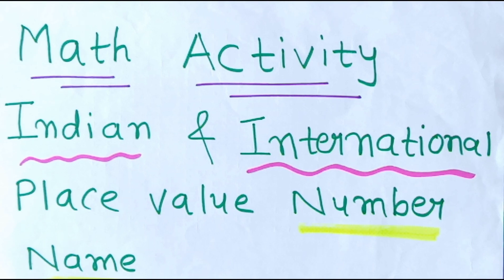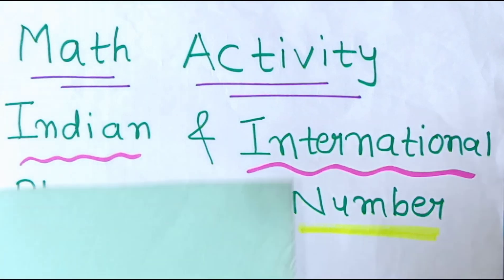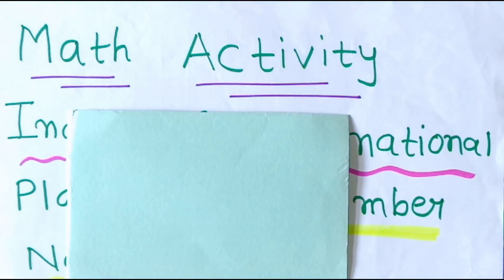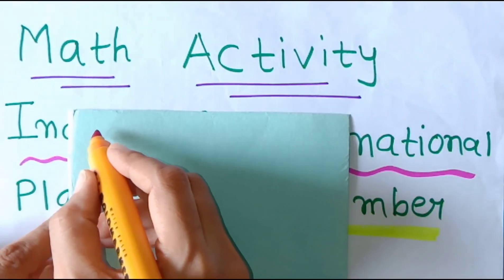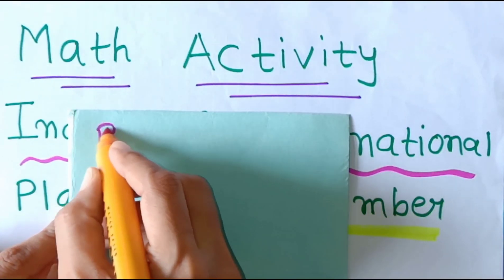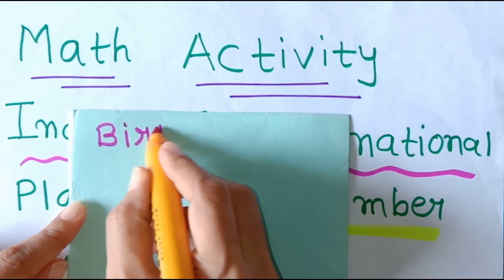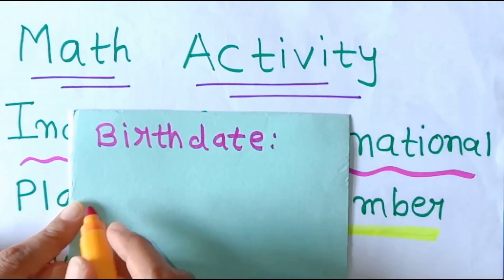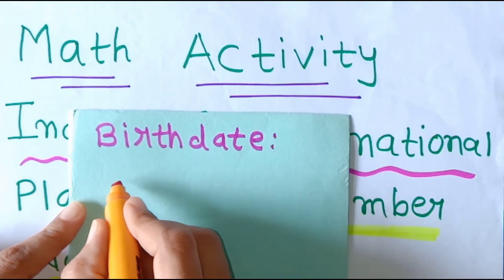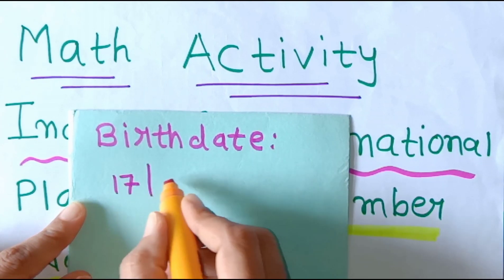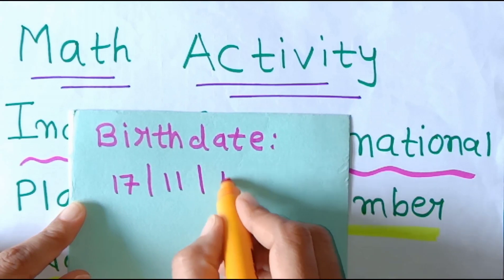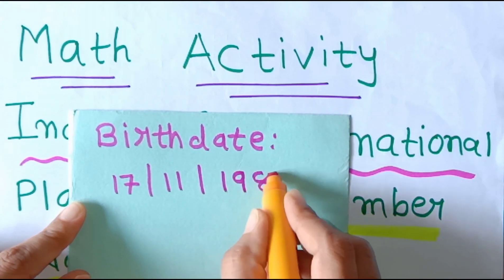For that, first take one card, or if you have a simple paper then that is also okay. First write down your birth date. For example, my birth date is 17th November 1989.